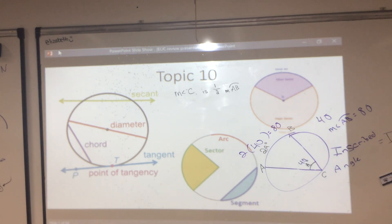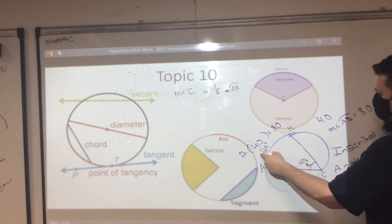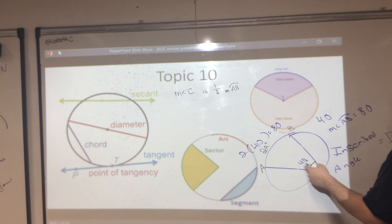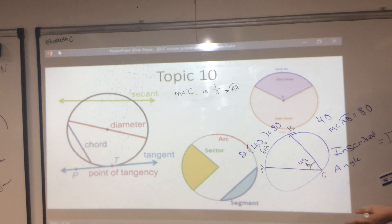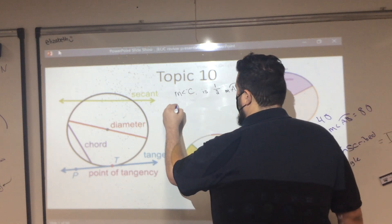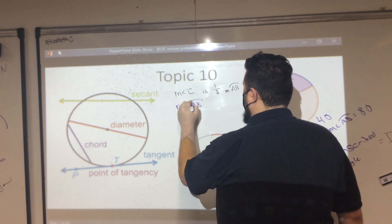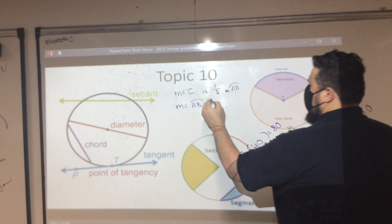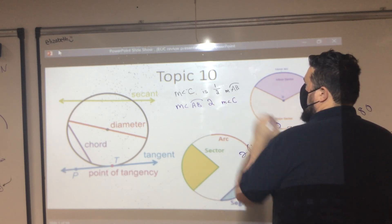Because we're able to do this — if arc AB is 2A and the inscribed angle is A — if I divide the arc by 2, I go back to the angle. So: the measure of arc AB is 2 times the measure of the inscribed angle.